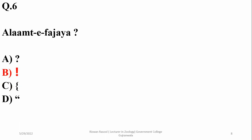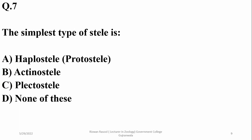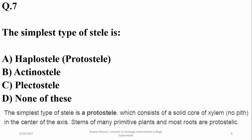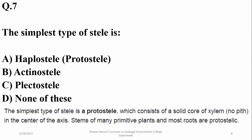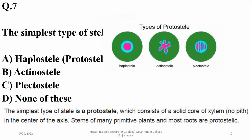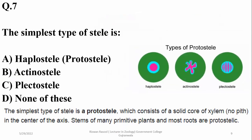Question six was a general knowledge question about the exclamatory sign — the right option is B (beta). Question seven: the simplest type of stele is basically protostele, also called haplostele. The different types of stele include actinostele and plectostele, which are relatively advanced stages.